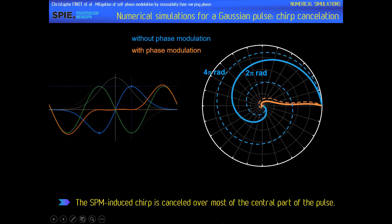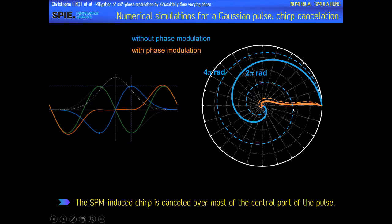Another way to see this mitigation is to plot the result on a polar plot, where the intensity is the radius and the phase is the angle. We see that when we have a pulse affected by self-phase modulation, we have a very nice Archimedean spiral, whereas when we switch the modulation on, we have something that is nearly aligned, which leads to a Fourier transform-limited pulse. We can see that the mitigation scheme involving a sinusoidal chirp is very efficient.